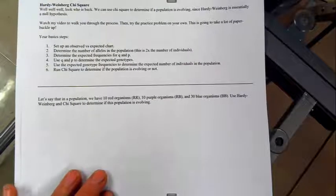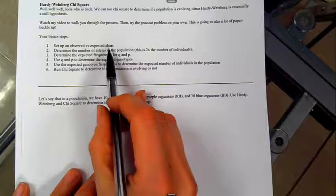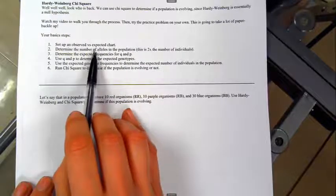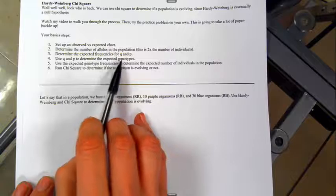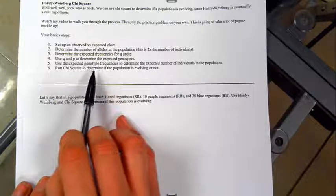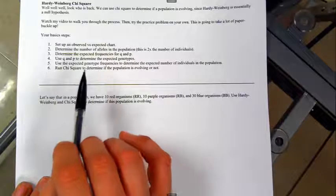Here we go. Your basic steps. We're going to set up an observe versus expected chart. We have to work with alleles, use our frequencies to determine expected genotypes, use that to figure out individuals, and then run chi-square. There are a ton of steps to this set of problems. You're going to need a lot of paper.